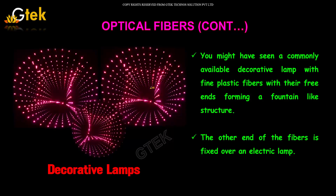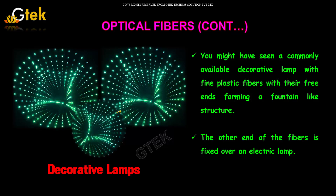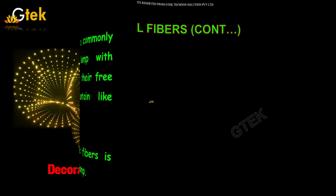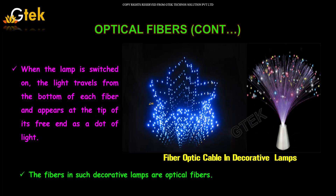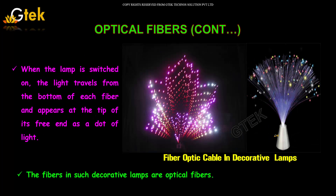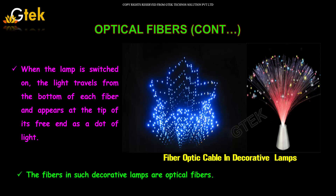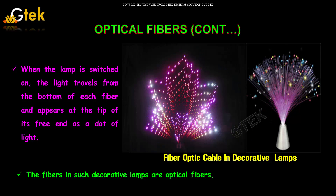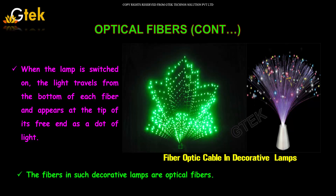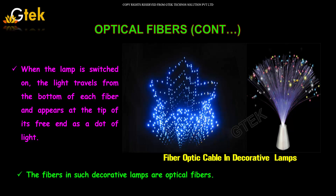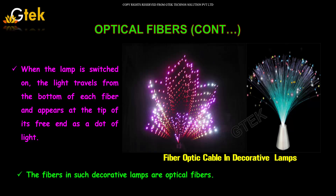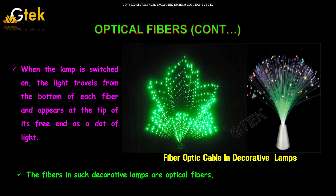You might have seen a commonly available decorative lamp with fine plastic fibers whose free ends form a fountain-like structure. The other end of each fiber is fixed over an electrical lamp. When the lamp is switched on, light travels from the bottom of each fiber and appears at the tip of its free end as a dot of light. The fibers in such decorative lamps are called optical fibers.